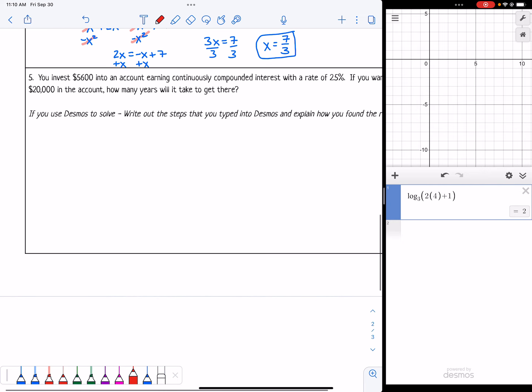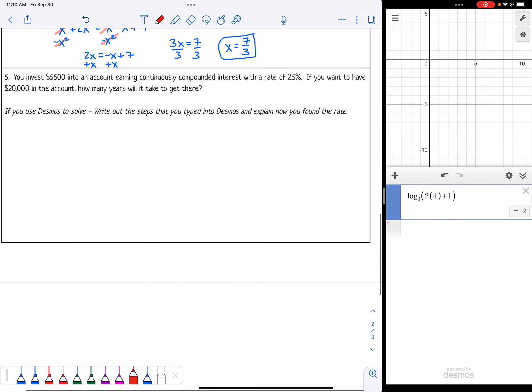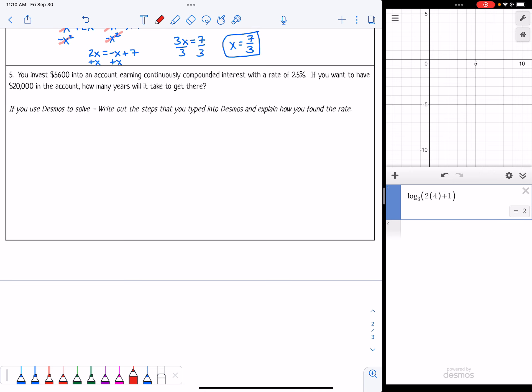Number 5. You invest $5,600 into an account earning continuously compounded interest with a rate of 2.5%. If you want to have $20,000 in the account, how many years will it take to get there? We're going to set it up as continuously compounded interest. That is the PERT formula. So A equals capital P, lowercase e, and then on the e we have an exponent of r times t. Then we're going to plug everything in.